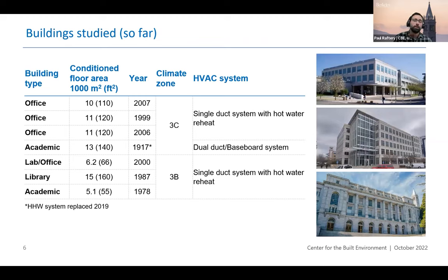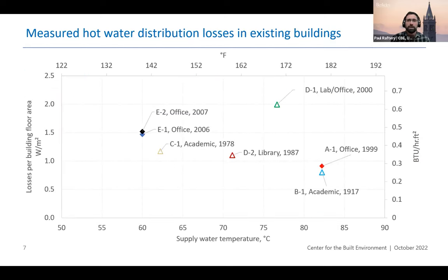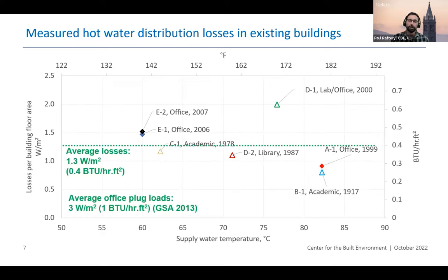We studied seven buildings so far, all in California, but all pretty large commercial or academic office buildings, primarily with single duct VAV systems and hot water reheat. What we found — looking at supply water temperature on the x-axis and losses normalized against building floor area on the y-axis — is a lot of scatter from these seven buildings. But taking the average, the distribution losses from hot water piping is about 0.4 BTUs per hour per square foot. To put that in context, that's about 40% of average office plug loads in the United States according to the GSA. I don't think anyone would characterize that as negligible.